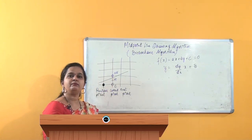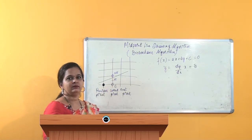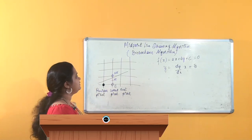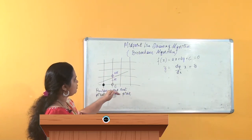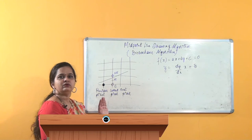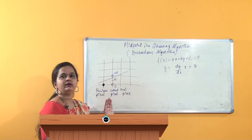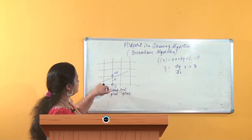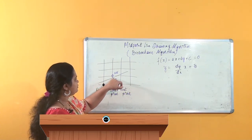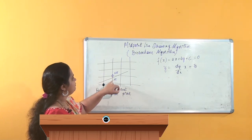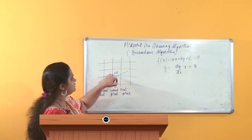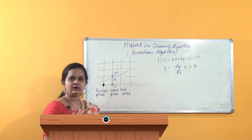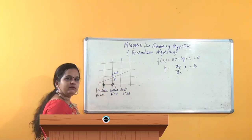The midpoint line drawing algorithm works very well because it selects the correct pixel — either the East (E) pixel or the North-East (NE) pixel — exactly according to the requirement of the line. When my line is moving to the next grid column, it decides whether to select the E pixel or the NE pixel, determining which pixel has to be activated so that the line gets formed.